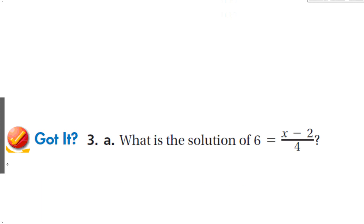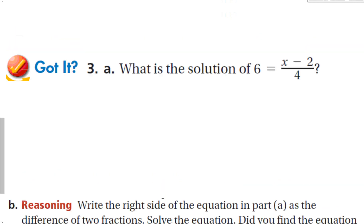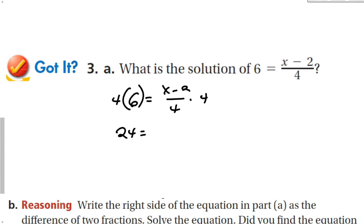What is the solution of 6 equals (x minus 2) over 4? I see 4 in the denominator, so I multiply both sides by 4 and get 24 equals x minus 2. Add 2 to both sides to give 26 equals x.